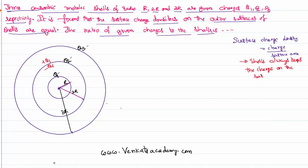If the charges are on the surface, they are at a larger distance from each other, so the force of repulsion between them is minimum and they are stable. So q1 will induce a charge of minus q1 on the inner surface of the second shell and plus q1 on the outer surface. The q1 and minus q1 together cancel, so inside the second shell there is no net charge — q1 effectively shifts to the outer surface of the second shell.